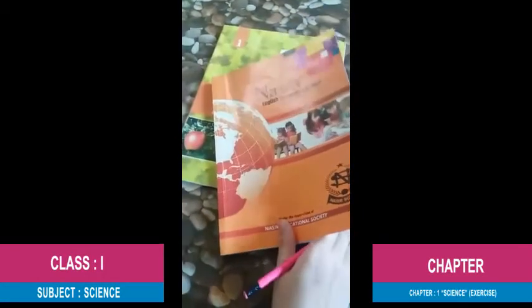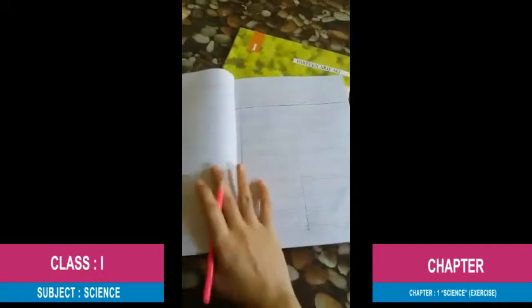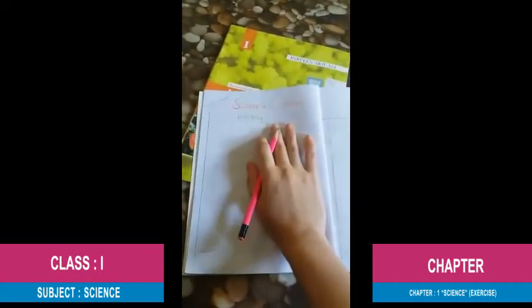Today, we will work in science chapter 1. Before we start, we will make a title page with any color pencil. Then we will make a title page or add a heading.